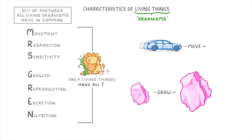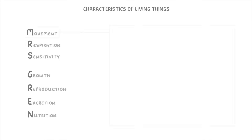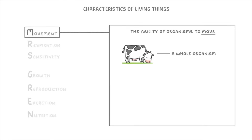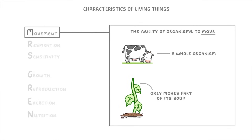Starting with Movement, this one is pretty self-explanatory — it just refers to the ability of organisms to move. That could be a whole organism like a cow moving its entire body as it walks around a field, or it could be something like a plant that only moves part of its body, for example when it turns its leaves towards the sun.